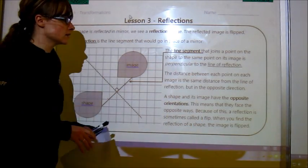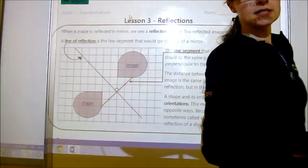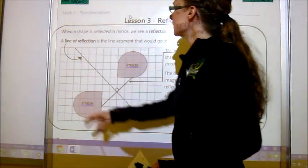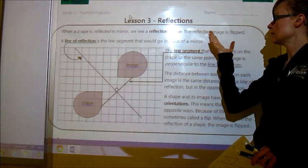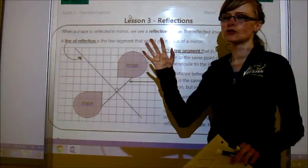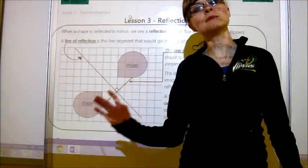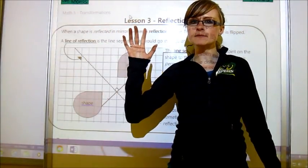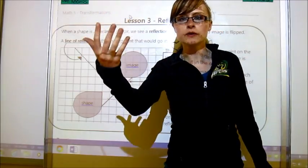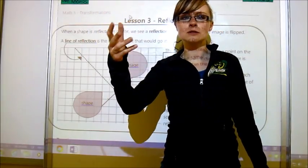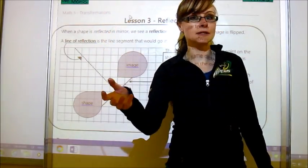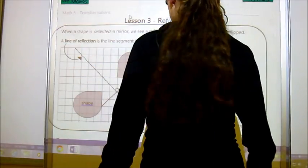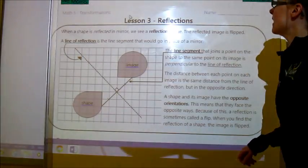But here are some things that you need to know about reflections in math. So when a shape is reflected in a mirror, we see a reflection image and that reflected image is flipped. So if a real Miss Bashforth holds up her right hand and looks in a mirror, a mirror Miss Bashforth is not going to be holding up her right hand. She's going to be holding up her left hand because it's on this side. But she would be facing this way, right?